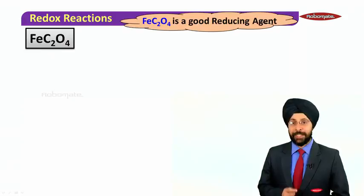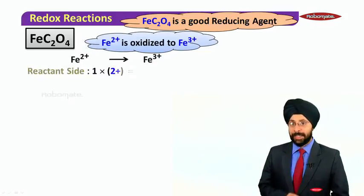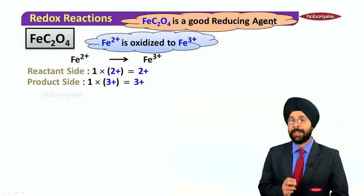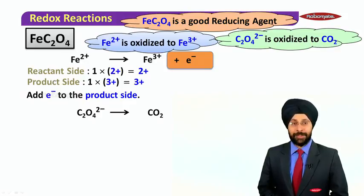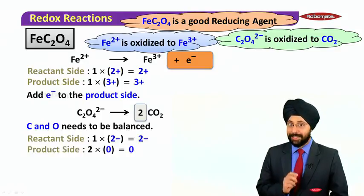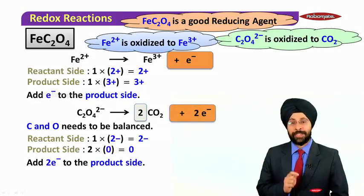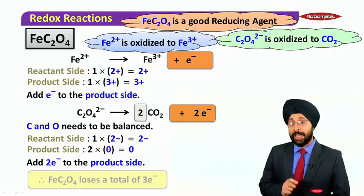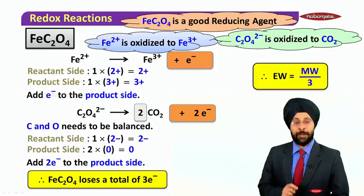Now let us focus on the special case of ferrous oxalate, FeC2O4. It is a good reducing agent. Fe²⁺ is oxidized to Fe³⁺: balancing the charge, one electron is added to the product side. C2O4²⁻ is oxidized to CO2: atoms are balanced by multiplying the product side by 2, and to balance the charge (reactant has 2 negative, product has 0) we add 2 electrons to the product side. Overall, FeC2O4 loses a total of 3 electrons, so its equivalent weight equals molecular weight divided by 3.